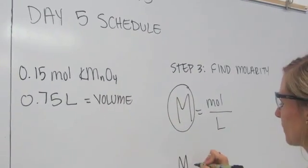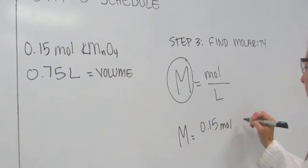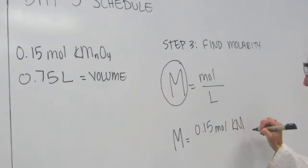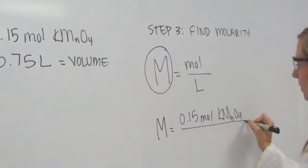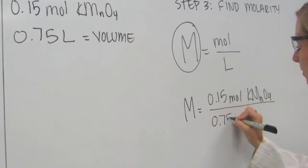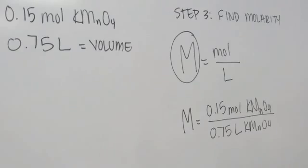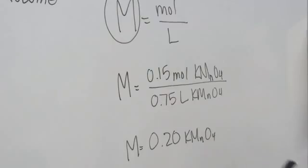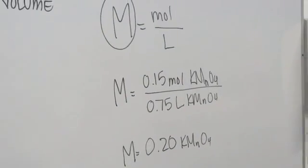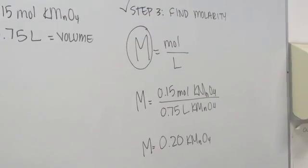So simple, plug the numbers into the equation and do the math. 0.15 moles of KMnO4 over 0.75 liters of KMnO4. Calculation, 0.2 KMnO4 is our molarity. Step three, check.